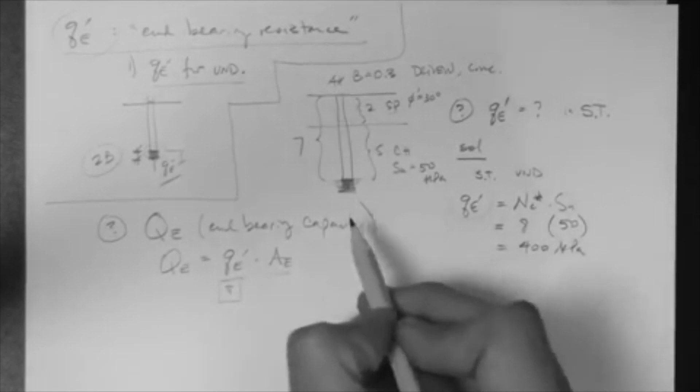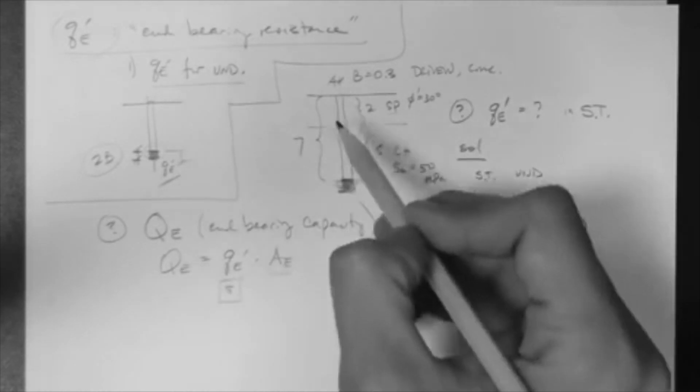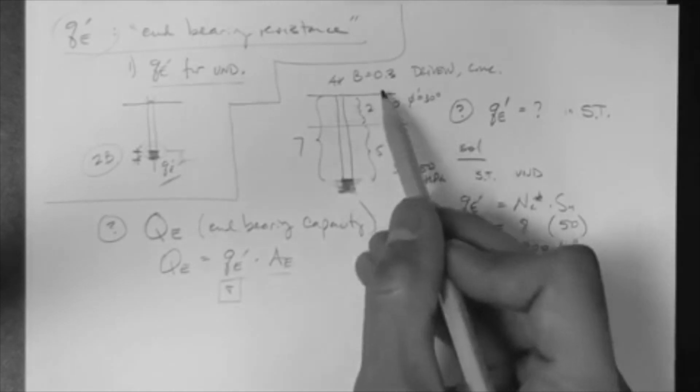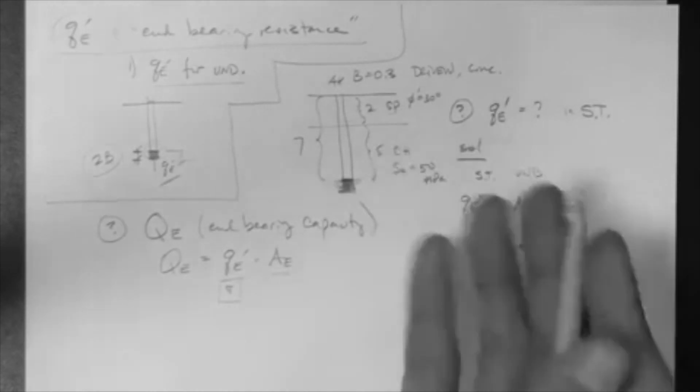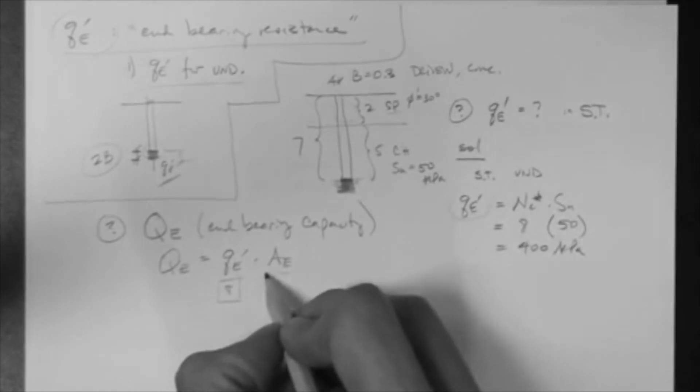So, what's the area associated with that sigma? Well, it's the end-bearing area of the pile. So, it's not the surface area, it's the end-bearing. It's normal to the sigma, normal to the Qe. So, this is πR².